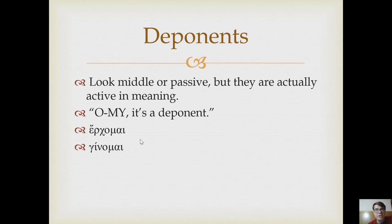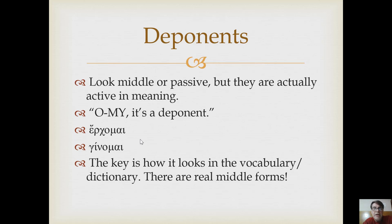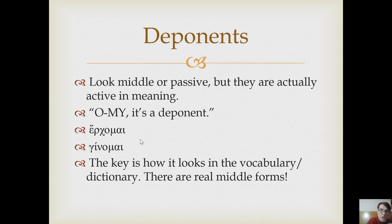Hopefully that jogs a memory from last semester. The key to spotting a deponent in the present tense is how the word looks in the dictionary. If a word has an omega in the dictionary and you find it having an omai form somewhere, that's a real middle or passive. But if the dictionary form itself has an omai ending from the very start, then it's a pretender — it's a deponent. Don't think that everything with one of these endings is deponent; there are actually legitimately middle and passive verbs.